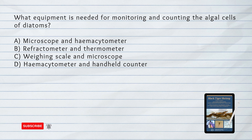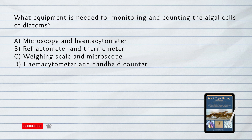What equipment is needed for monitoring and counting the algal cells of diatoms? D. Microscope and hematocytometer.